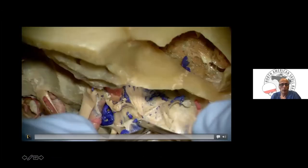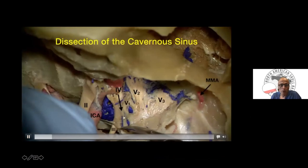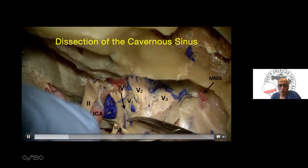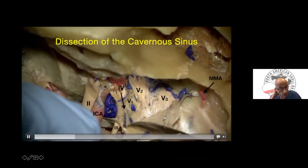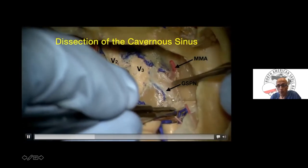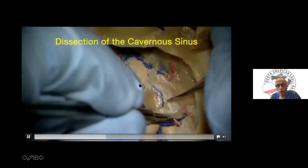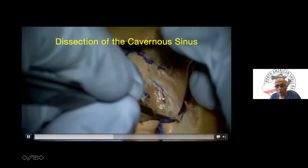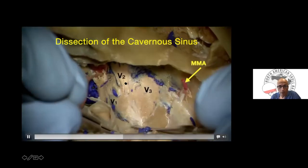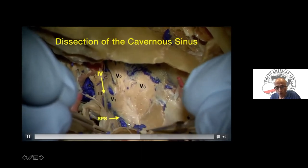This video demonstrates cavernous sinus extradural dissection. You can see the oculomotor nerve, fourth nerve, V1, V2, V3, and the middle meningeal artery. The brain is removed in this cadaveric specimen for demonstration purposes. You see the oculomotor nerve entering the cavernous sinus, the GSPN coming from the geniculate ganglion, the middle meningeal artery, and the V3 branch of the trigeminal nerve. This is the petrosphenoid rhomboid — the so-called Kawase triangle. V3, V2, V1, the fourth nerve, oculomotor nerve, and a glimpse of the superior petrosal sinus.